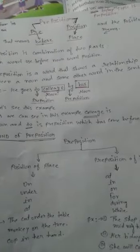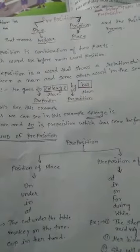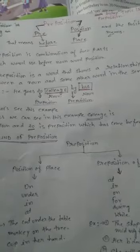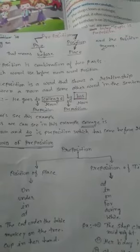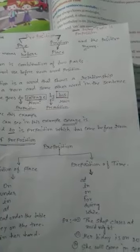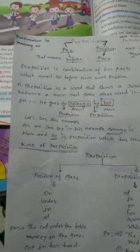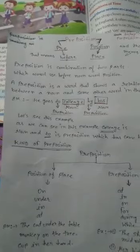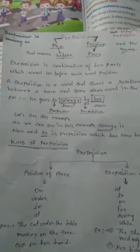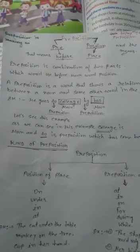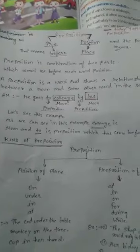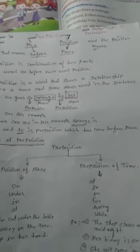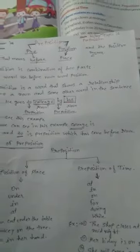The definition of a preposition is: a preposition is a word that shows a relationship between a noun and some other word in the sentence. For example, 'He goes to college by bus.' In this example, 'college' is the noun and 'to' is the preposition, which has come before the noun.